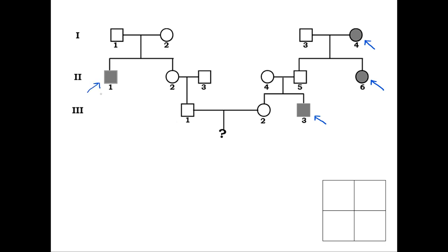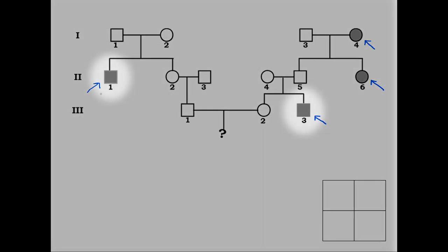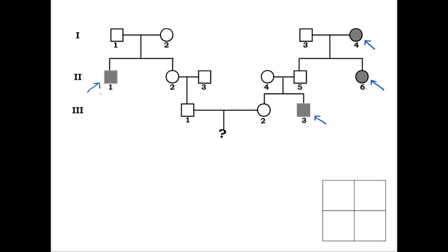First, we have to determine how this trait is inherited, whether it is dominant or recessive. Individual 2-6 and her mother 1-4 are affected, but we notice that both individuals 2-1 and 3-3 have the trait but do not have an affected parent. As mentioned earlier, seeing an affected child with unaffected parents tells us the trait is recessive. Let's label all the affected individuals as aa, since they must be homozygous recessive.